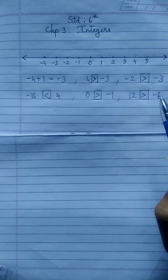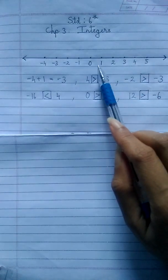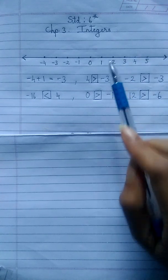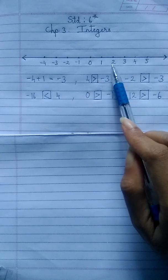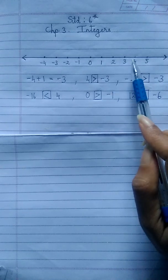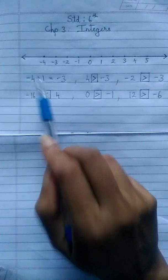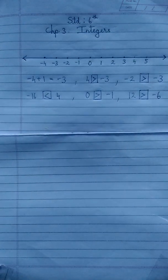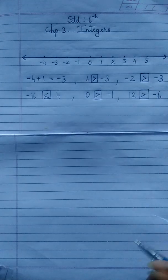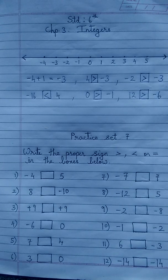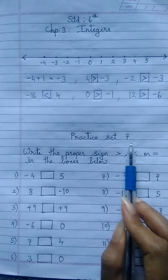On the number line, every number is greater than the number on its immediate left by 1. So 3 is greater than 2 by 1, and 4 is greater than 3 by 1. The same applies to negative numbers: minus 3 is greater than minus 4 by 1. Now let's start Practice Set 7.